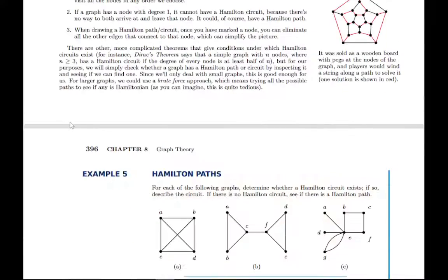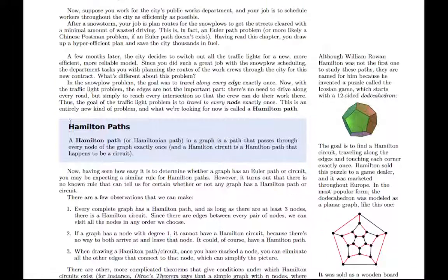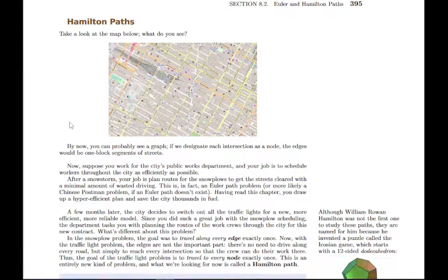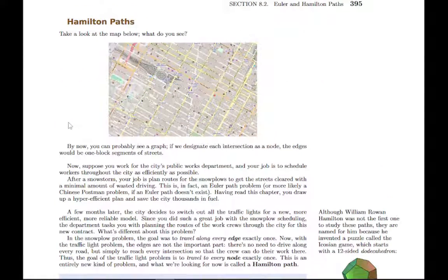And that brings us to the end of section 8.2. Most of the section is dealing with Euler paths and Euler circuits because there's a more straightforward rule for them. Hamilton paths and circuits, we mostly have to stick to trial and error unless we notice that they fit one of a few categories.